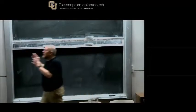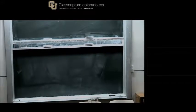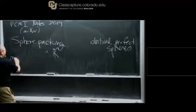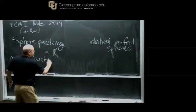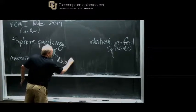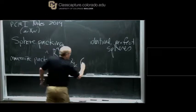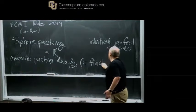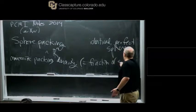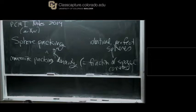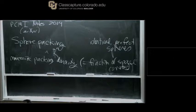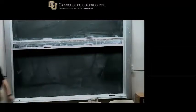What we're trying to do is maximize the packing density — the fraction of space covered by the spheres. We have a bunch of spheres that can be tangent but are not allowed to overlap, and we want to cover as much of space as possible, cramming in as many spheres as we can.